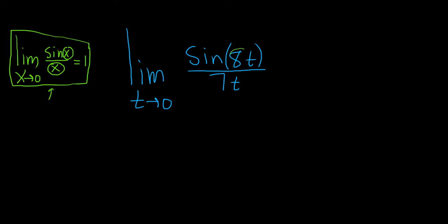So here we have an 8t. So we want the bottom to be an 8t. So we can do it in two steps, or we can do it in one. Let me just go through it slowly. So we have t approaching 0. We still have the sine of 8t, because that's what we want. That stays.